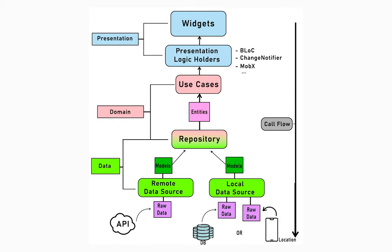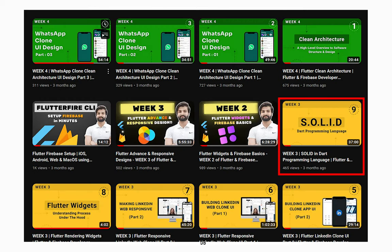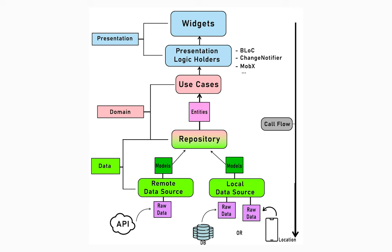The data layer also depends upon the domain layer for the repository by following the dependency inversion principle. The send message method in the repository implementation works with a remote data source, which utilizes models for necessary conversions. The actual logic is triggered in the data source and the action is performed. All that flow is connected through dependency injection — a very important file that connects the presentation layer to the remote data source while maintaining the clean structure of the app.